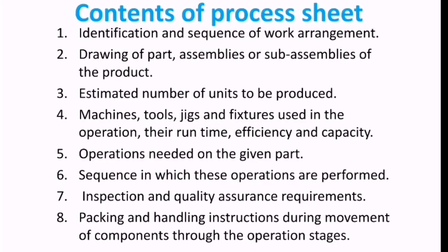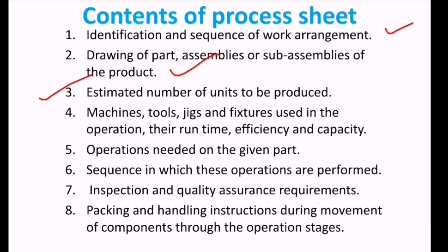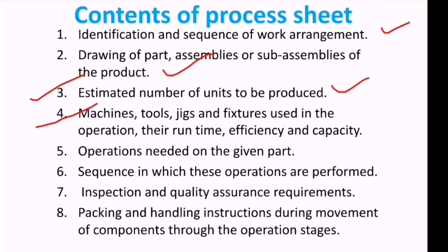The contents of a process sheet include: first, identification and sequence of work arrangement; second, drawings of part assemblies or sub-assemblies, which are production drawings of individual parts; and third, estimated number of units to be produced.